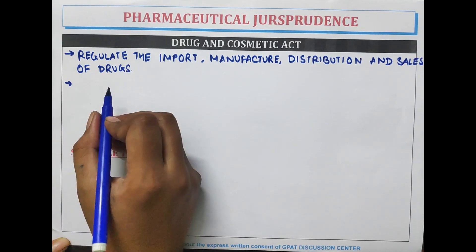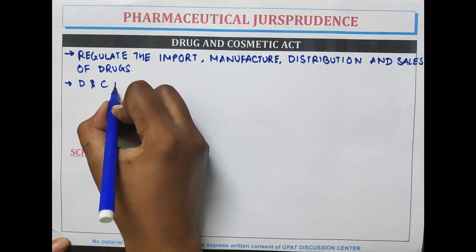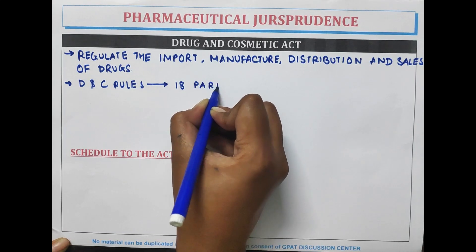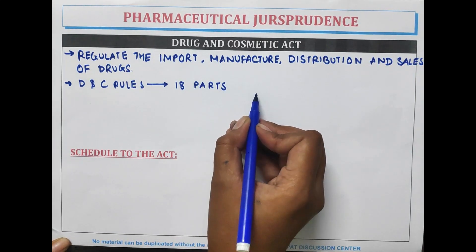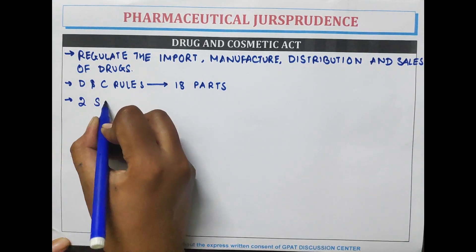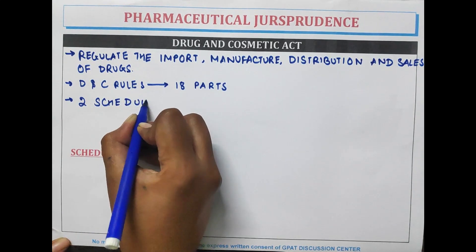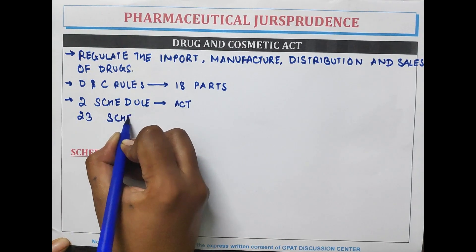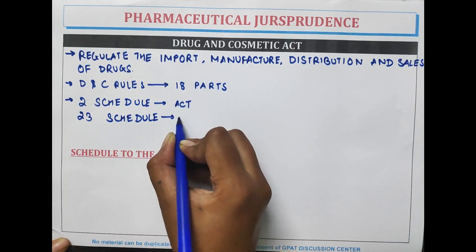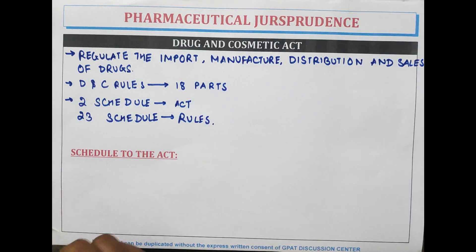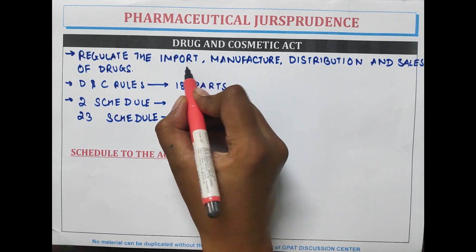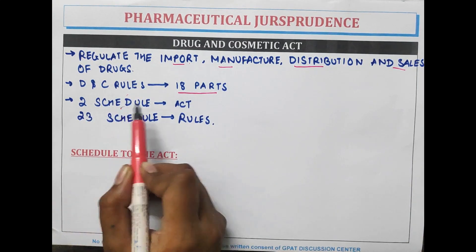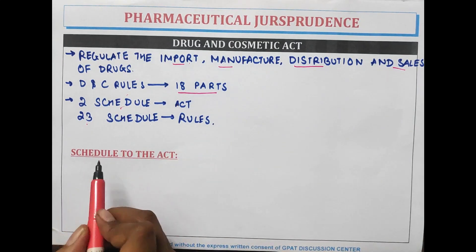The Drug and Cosmetic Rules have been divided into eighteen parts, each dealing with a particular subject. In the act there are two schedules to the act and twenty-three schedules to the rules.